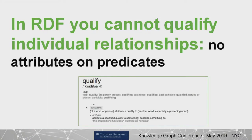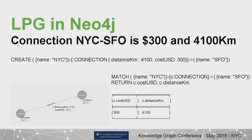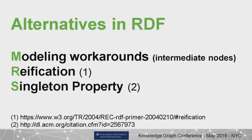A consequence of unique relationship instances is that you can qualify them — associate properties to relationships as well. For example, a connection between New York City and San Francisco can have a distance and a cost. You can do that because the relationship is uniquely identified. You can't do that simply in RDF. There are modeling workarounds — intermediate nodes, reification — but that introduces artificial complexity into your model because of the paradigm.